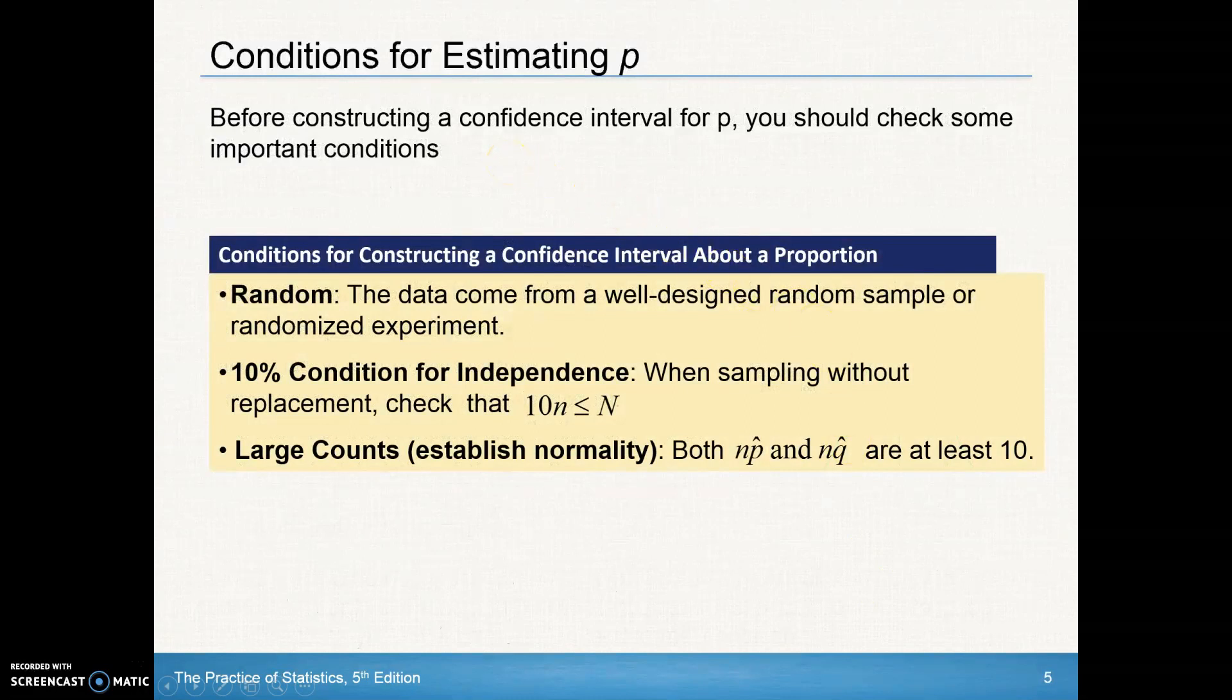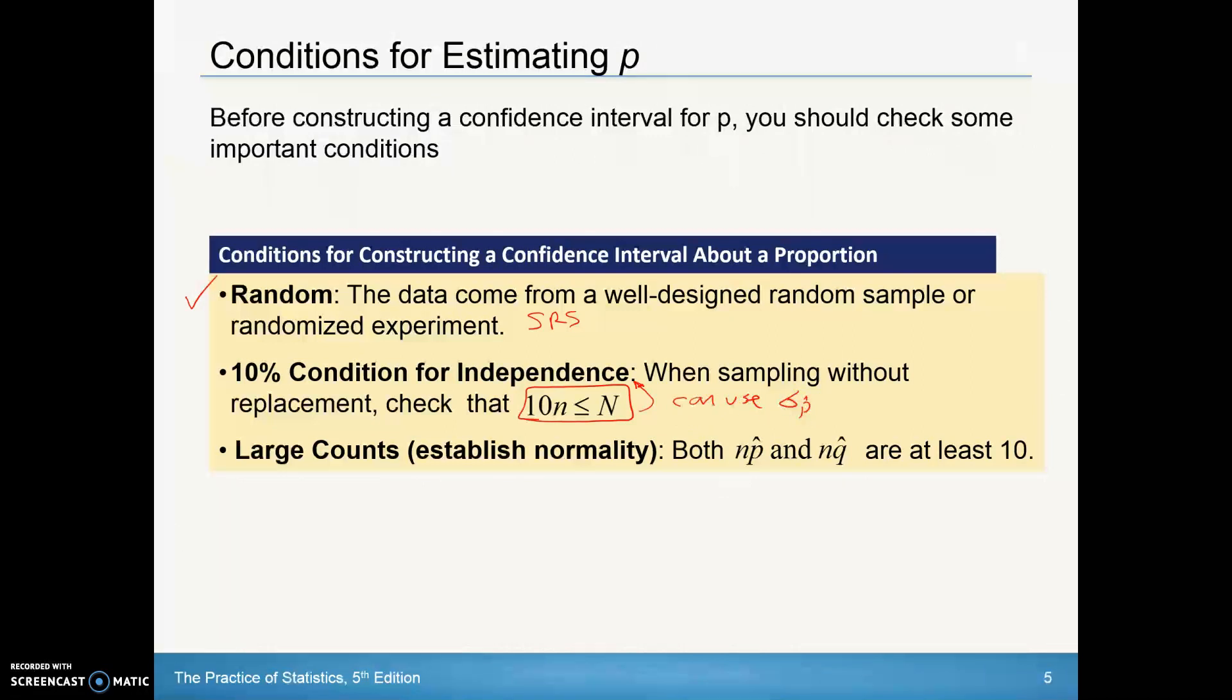Before constructing a confidence interval for p, you should always check these important conditions. Number one, check that data come from a well-designed random sample, an SRS. Check the 10% condition, that 10 times your sample size is less than or equal to your population. That helps us determine independence and lets us know we can use the standard deviation for our p hats. And then we'll check the large counts. This helps us establish normality. We'll check that n times p hat is greater than or equal to 10 and n times q hat is greater than or equal to 10.